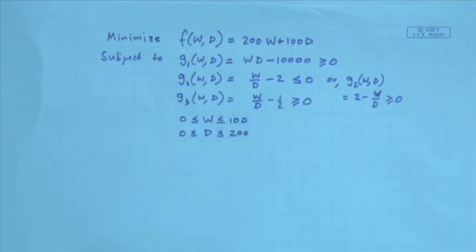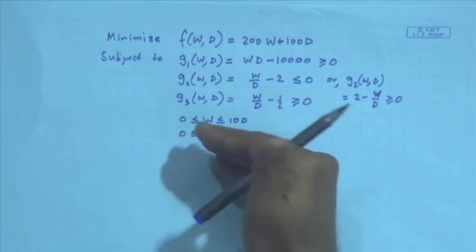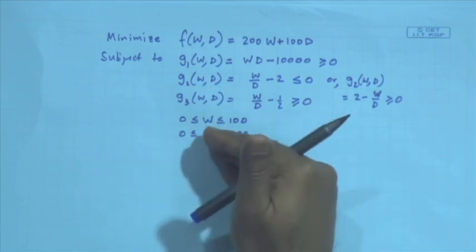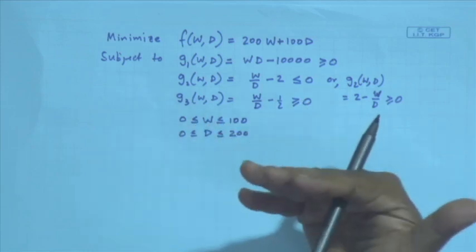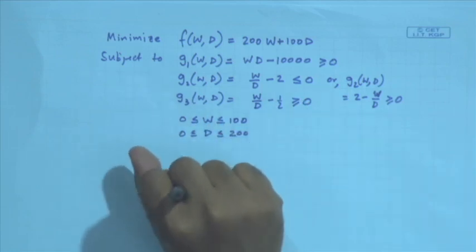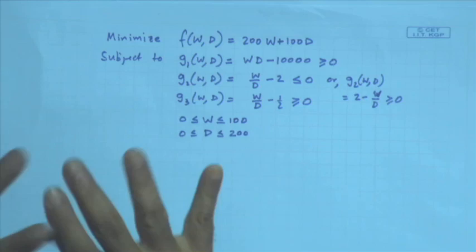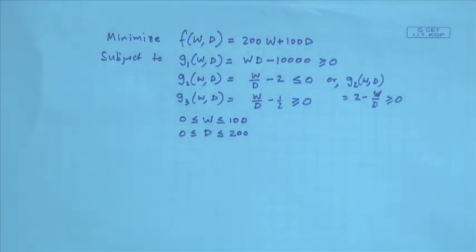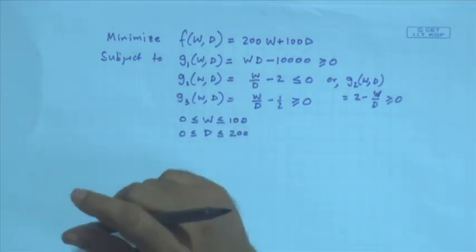Constraint comes in and says such a trivial solution cannot be your optimal solution — you should have some area inside. If W = 0, D = 0, there is no area inside, so that is not allowed.